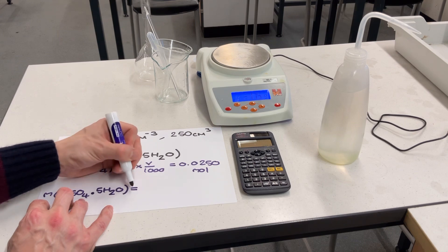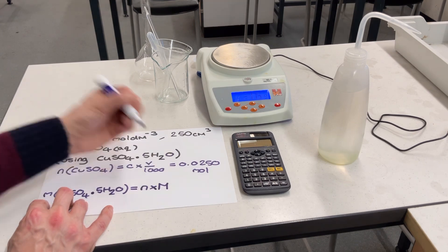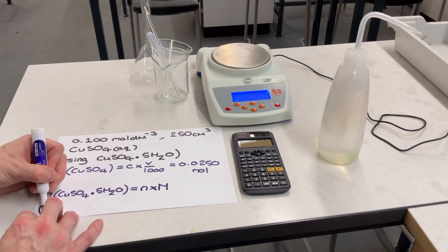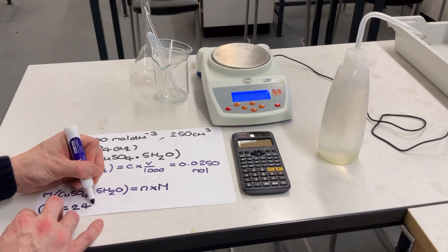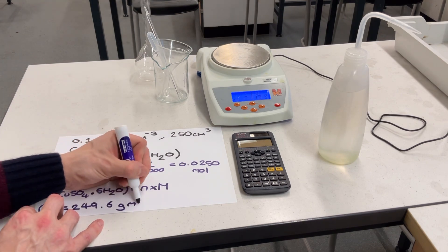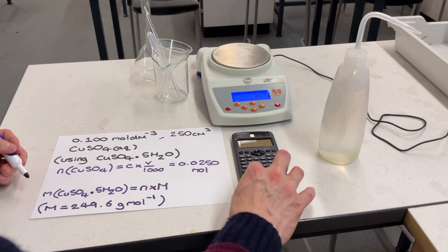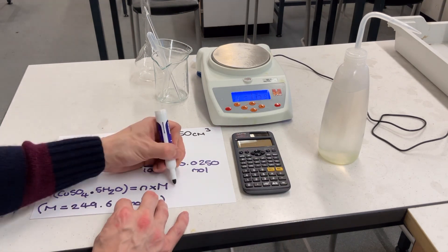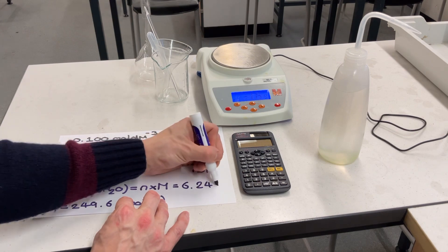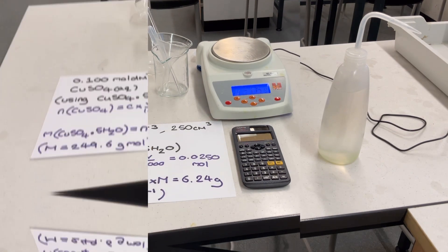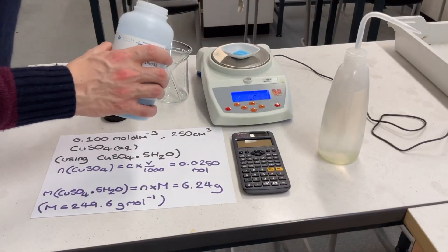be sure to check for this and then perform the calculation you can see on screen now to deduce the mass of solid required to prepare our standard solution. Here I'm using hydrated copper sulfate, which is absolutely fine, so long as I then use the hydrated copper sulfate molar mass in my calculations to prepare my 250 centimetre cubed standard solution.